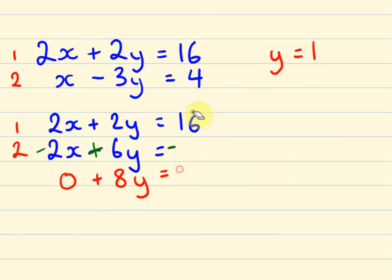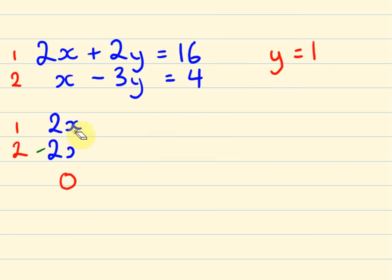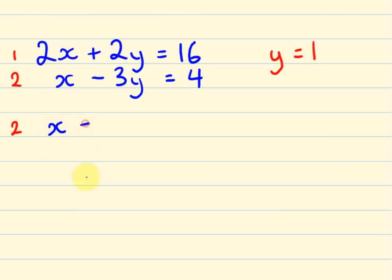We'll rub these out and do a bit of substitution. Substituting into equation 2: x take away 3y — 3 times y is 3 — equals 4. So x take away 3 equals 4. What number can you subtract 3 from to get 4? x equals 7.